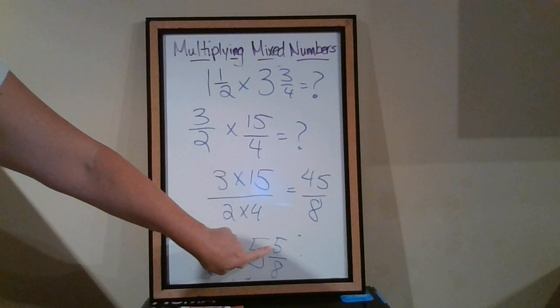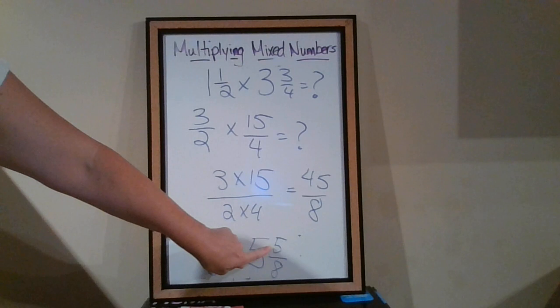And it's as simple as it can go. There's nothing besides the number 1 that divides evenly into both 5 and 8. So we know that that is simplified. All right, good luck with your multiplying mixed numbers. Thank you.